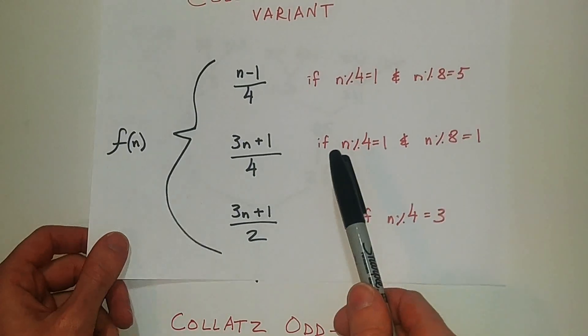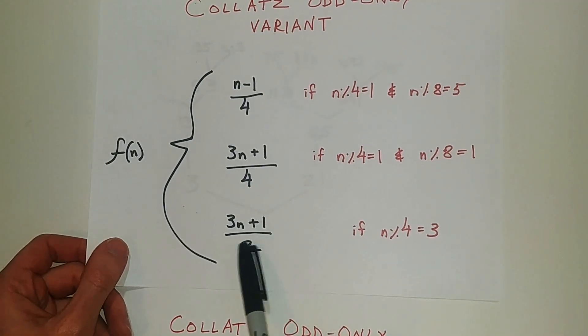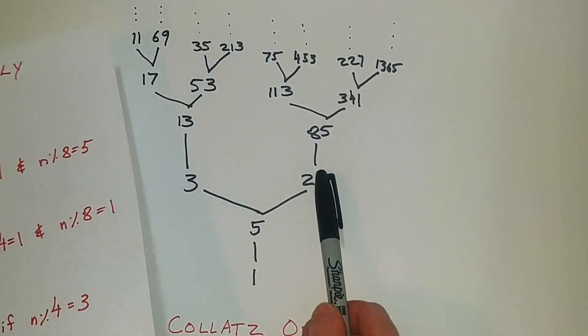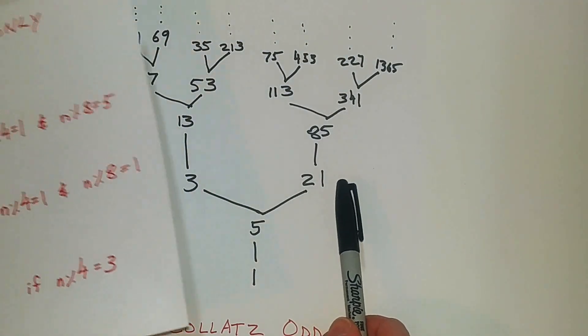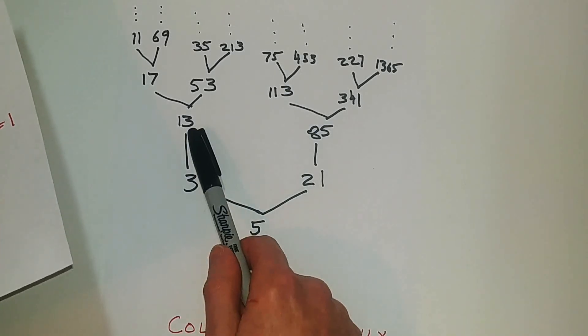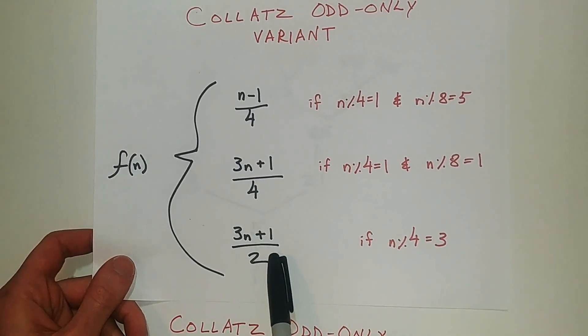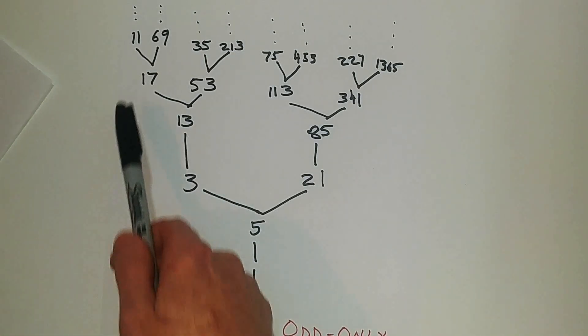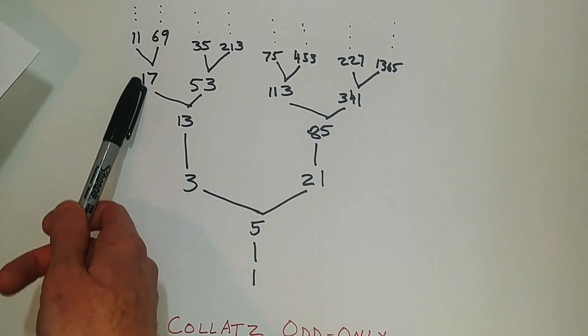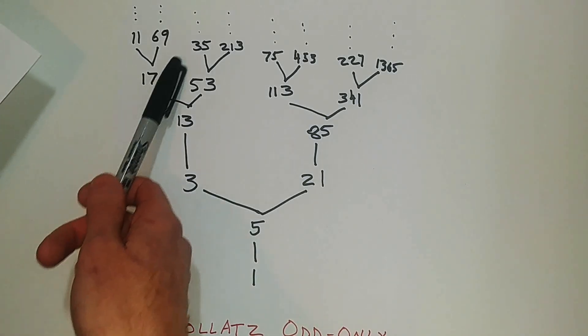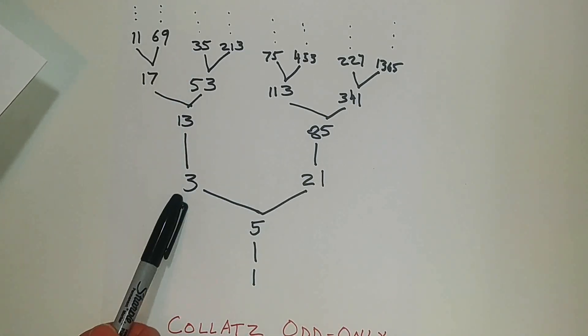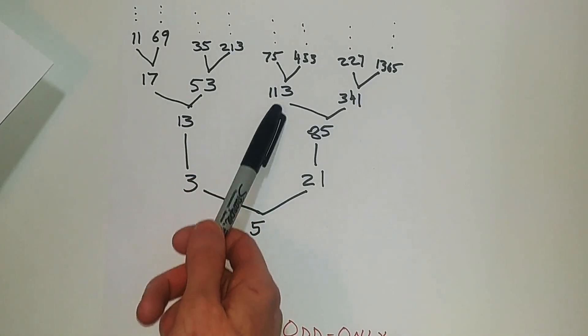The real annoying thing is especially this 3n plus 1 divided by 2, because if you think about when we plug in a number n, 3n plus 1 divided by 2, that always gives us a bigger number. So we're iterating down, for instance, 11, and then we get 17, which is weird, or 35, 53, 5, 75, 113.